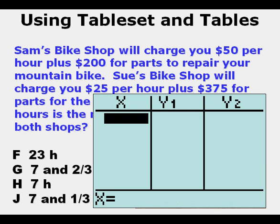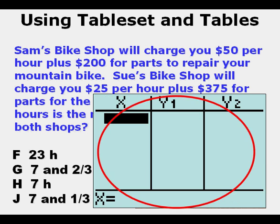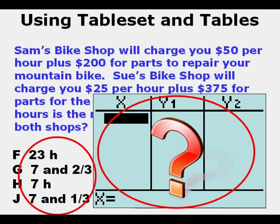After we've done that, we go to our table view and we don't see anything—we don't see input values under x or output values under y1 or y2. That's because under ask it's really asking us for them, so we need to enter them.